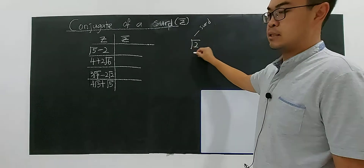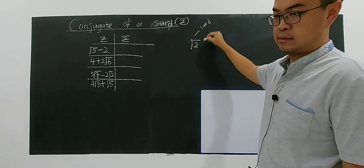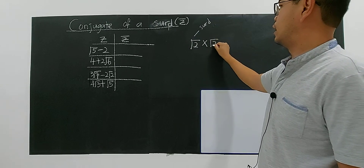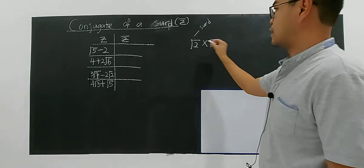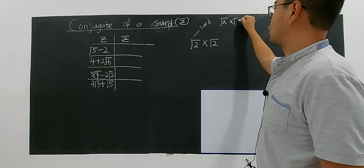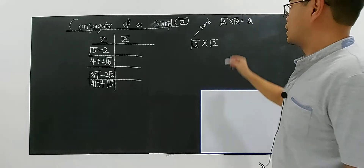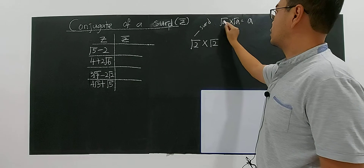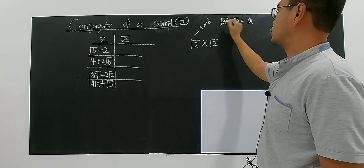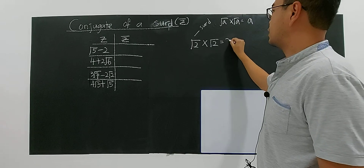For a single surd — one surd, a single surd number — you have to multiply it by itself, because you know that square root of a multiplied by square root of a gives you a. If two identical square root numbers are multiplied together, you get a. So for example, square root of two times square root of two gives you two.